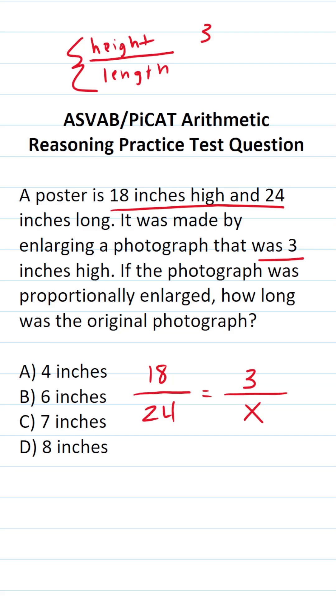The typical way you solve proportions is like this. You do cross-multiplication. 18 times x is 18x equals 24 times 3. That's the typical way to solve proportions.